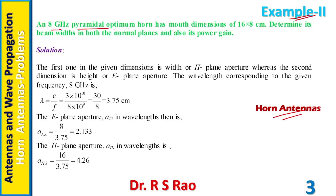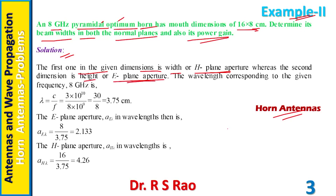Example 2: an 8 GHz pyramidal optimum horn has mouth dimensions of 16 by 8 cm. Determine its beam width in both normal planes and also its power gain. The mouth dimensions are given as 16 by 8 cm. The first dimension is the width or H-plane aperture, whereas the second dimension is the height or E-plane aperture. The pyramidal horn mouth is rectangular in shape — one dimension is larger and another is smaller.